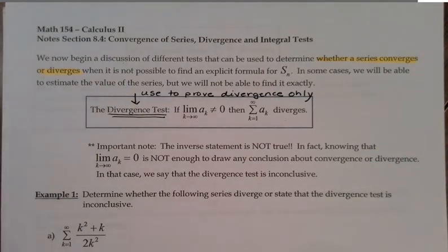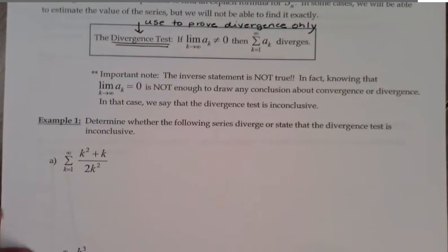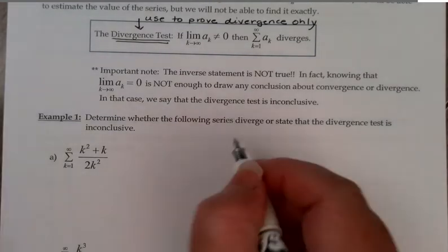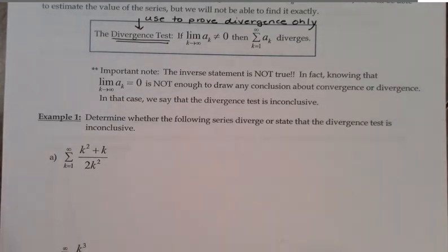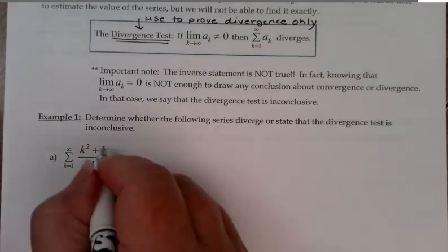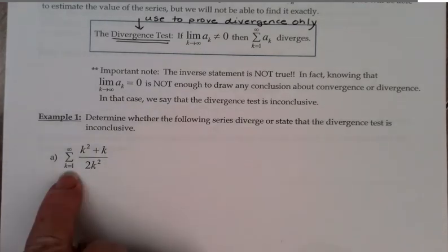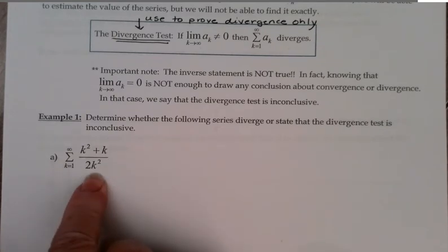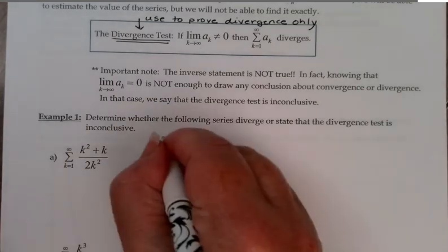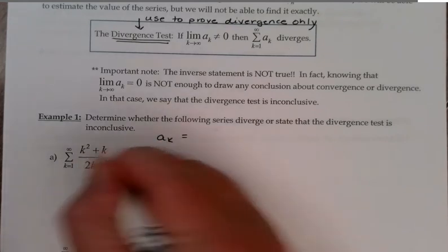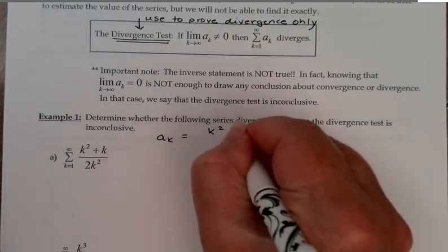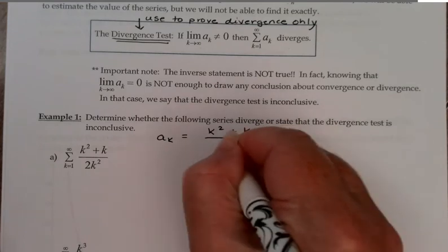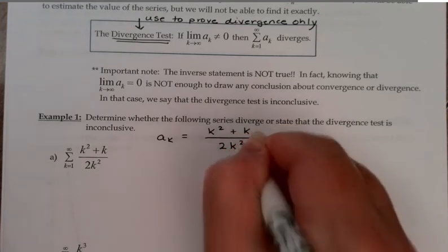Use this test to prove divergence only. We're going to determine whether each of the following series diverges, or we'll simply state the divergence test is inconclusive. Again, we can't prove convergence this way. So in this first series, we want to sum from 1 to infinity terms of this form.